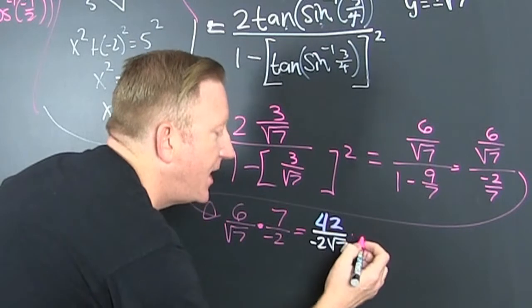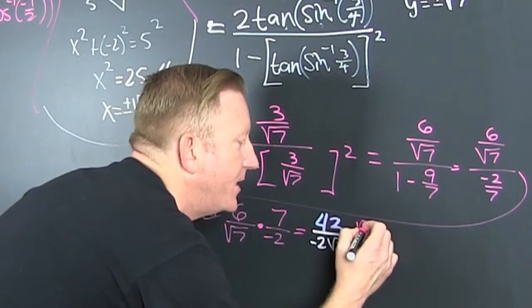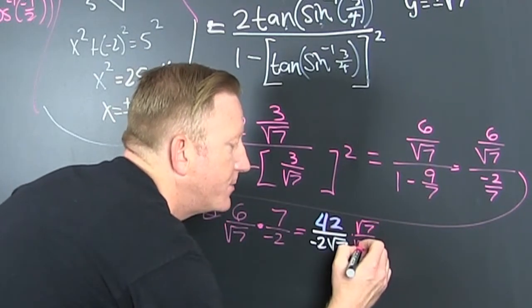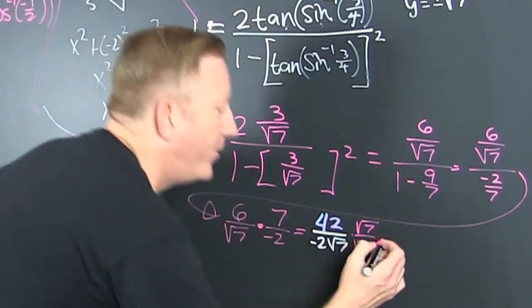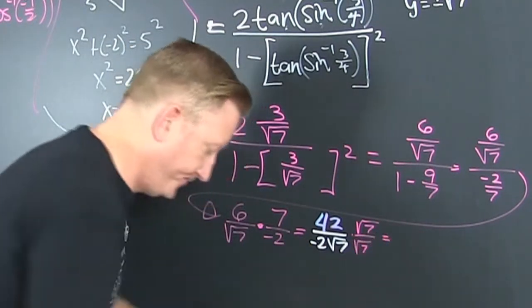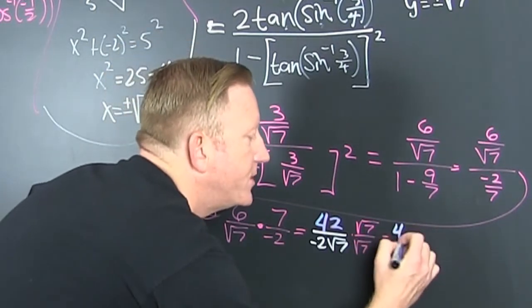but we're not done. You need to rationalize. You need to rationalize that denominator. Well, you need to make it rational by multiplying top and bottom by the square root of seven now. Oh, boy. So that's a 42.